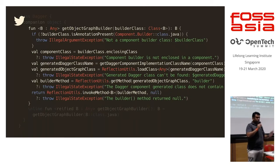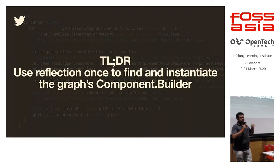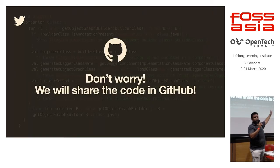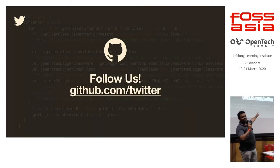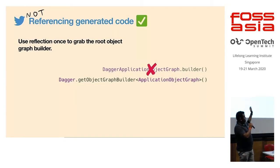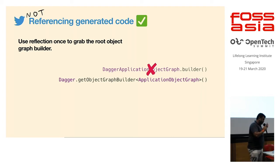The TL;DR is that we use a little bit of reflection to get the graph, and once the graph is there we have access to all the objects in it. We'll post the code — follow us on GitHub, we have a lot of open source projects there. Instead of referencing the generated class directly, which new engineers have to generate first, this little helper removes that friction entirely.